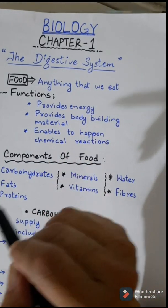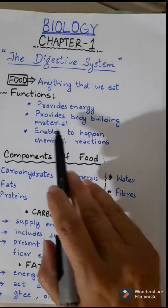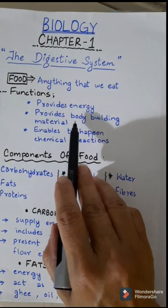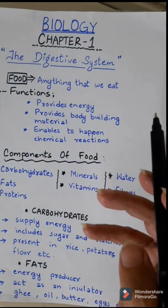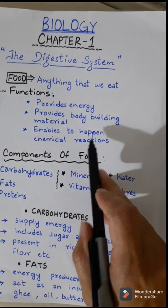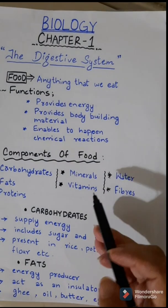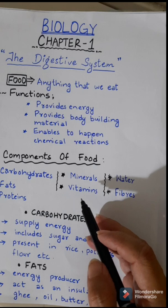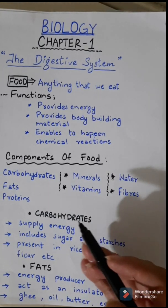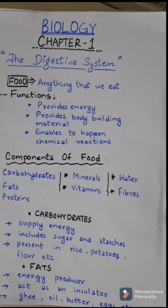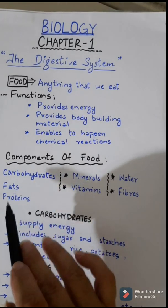The fuel for the human body is food. Food supplies energy and all the chemicals needed for growth — it provides body-building materials and keeps the body working properly by enabling chemical reactions. Food is not of one type; it contains a number of components known as nutrients.